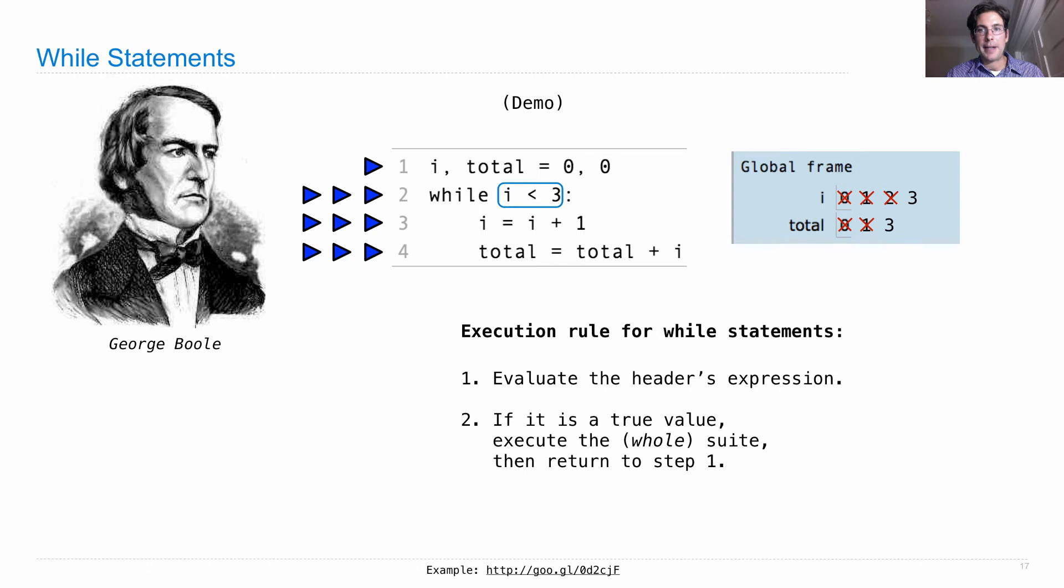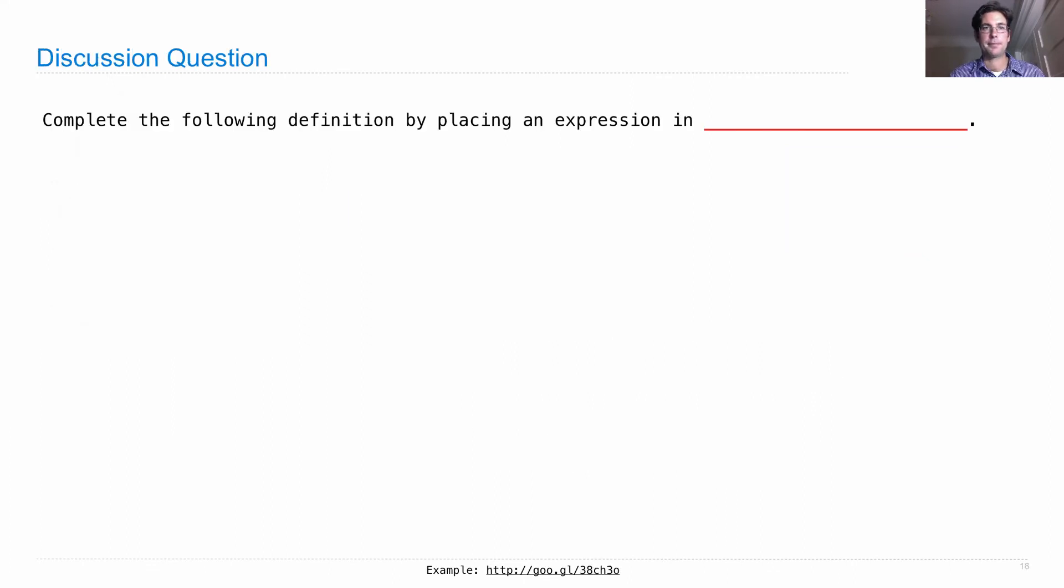We'll finish it up. i is bound to 3 and total will be bound to current total is 3, i is currently 3, so total will be 6. Then we go up to the top again and we ask is i less than 3? This time it's not, and so we're done. That's how a while statement works.